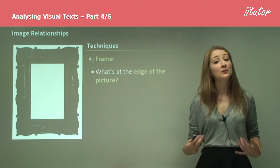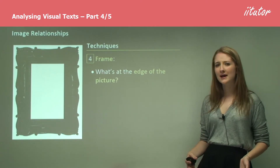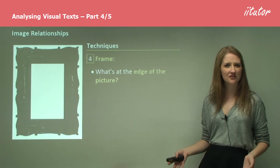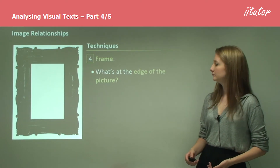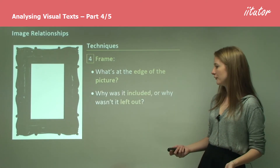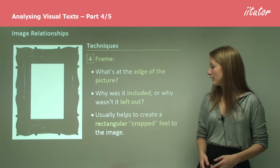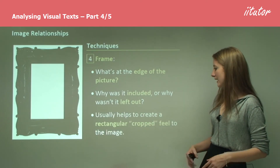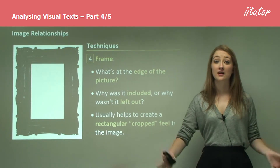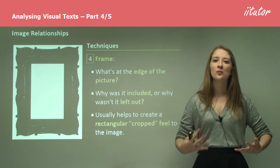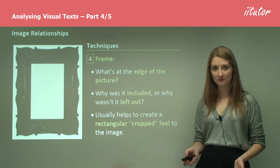A fourth technique which you can make use of is the technique of frame. When you're looking at this, ask yourself: what's at the edge of the picture? Why was it included? Or why wasn't it left out? It usually helps to create a rectangular cropped feel to the image — so it's not literally necessarily a frame, but the frame is the word which demonstrates what is included in the image and what isn't.